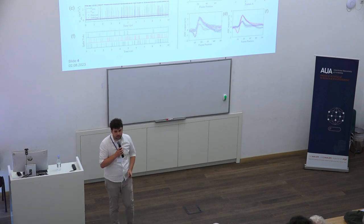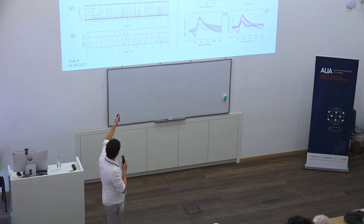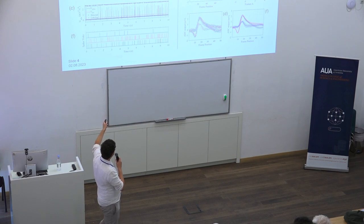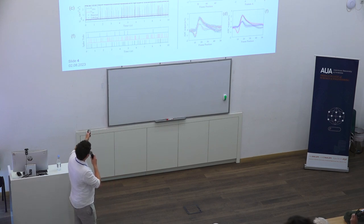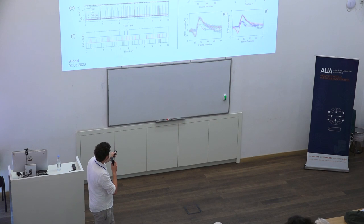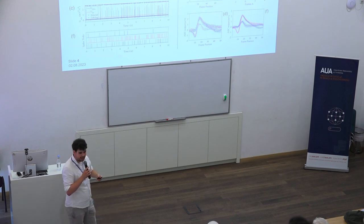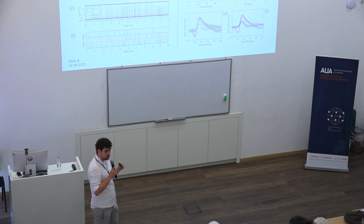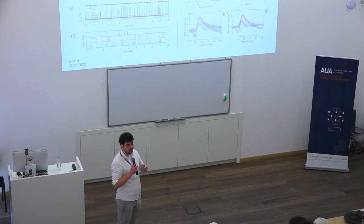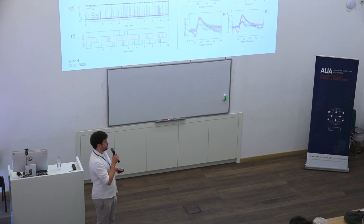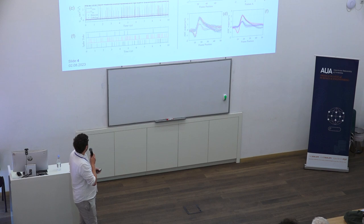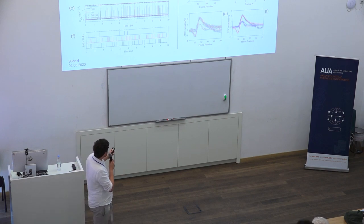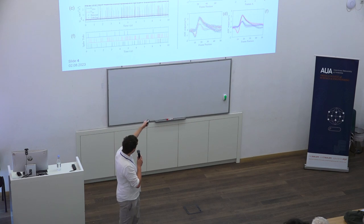A typical spike sorting or neural processing pipeline looks like this. First, we have our electrodes inside the brain, then a preamplifier to digitize the signals. From the resulting waveform, we use spike detection to detect spikes. This is usually done by applying a threshold — there are multiple techniques, but the simplest is a threshold, sometimes combined with some computation before applying it.